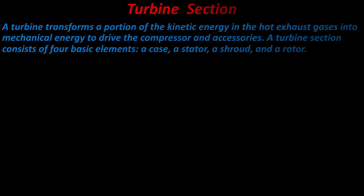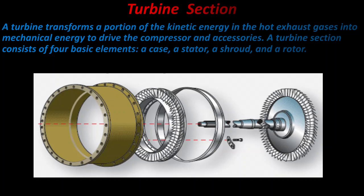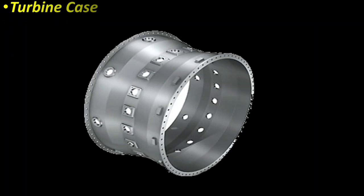A turbine section consists of four basic elements: a case, a stator, a shroud, and the rotor. You can see here in this picture a turbine case, turbine stator, shroud, and rotor of the turbine section.